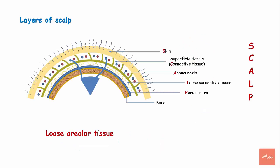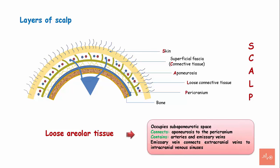Loose areolar connective tissue is the subaponeurotic space and connects the aponeurosis to the pericranium. The emissary veins course through this layer and connect the extracranial veins to the intracranial venous sinuses.